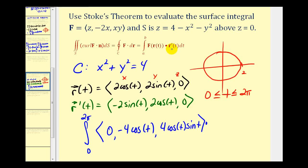And we're going to dot this with R prime of T, which we found here in green. Let's go and determine our dot product. We're going to have zero, then we'll have minus eight cosine squared T. Let's go ahead and evaluate this on the next page.